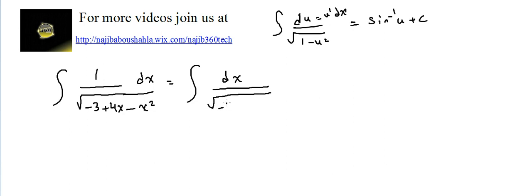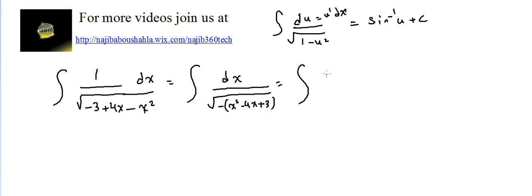Let's work with the expression under the radical: -3 + 4x - x². I factor out the negative sign to get minus(x² - 4x + 3). To complete the square, I add and subtract 4, since the coefficient of x divided by 2, squared, gives 4.